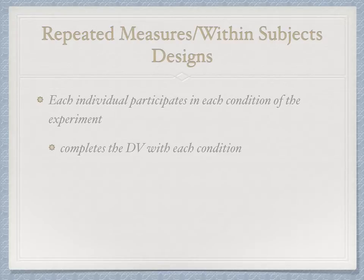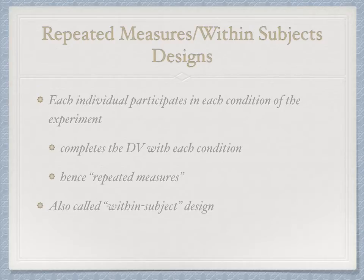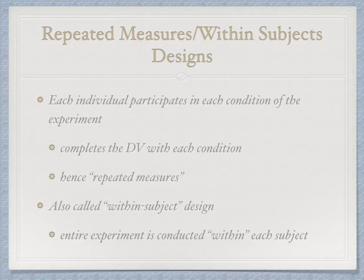The participant completes the dependent variable measurement in each condition — that's why we call it Repeated Measures, because we're measuring them repeatedly. This is also called a Within Subjects Design because the entire experiment is conducted within each participant. For example, Joe participates in all three conditions, so we've essentially done the entire experiment within Joe, and we do the same for Sally, Frank, and Francis.